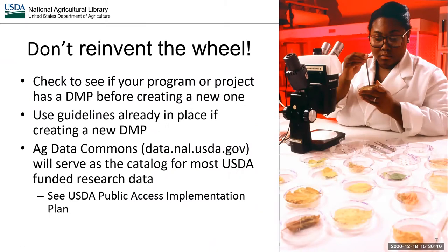Before you create a new DMP, researchers should determine if a DMP specific to their agency, program, or previous projects already exists, and use that as a template. If a DMP does not exist, follow the guidelines already in place to create yours. Don't reinvent the wheel. Note that current DMP guidelines for ARS are for two to three pages integrated into the project plan. Also note that under the USDA Public Access Implementation Plan, most research data generated with USDA funding will be required to be cataloged in the Ag Data Commons, whether deposited directly or linked from another repository.